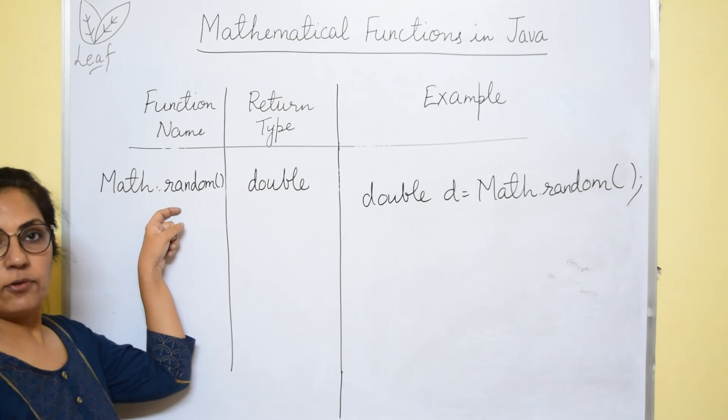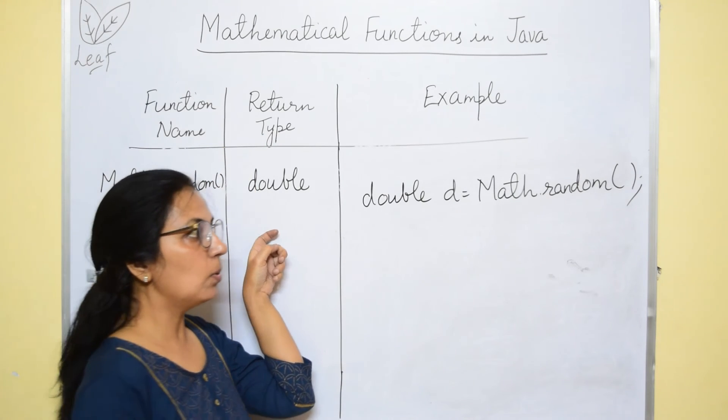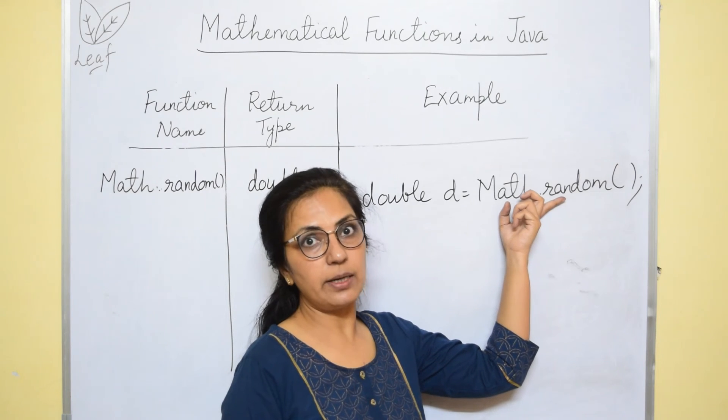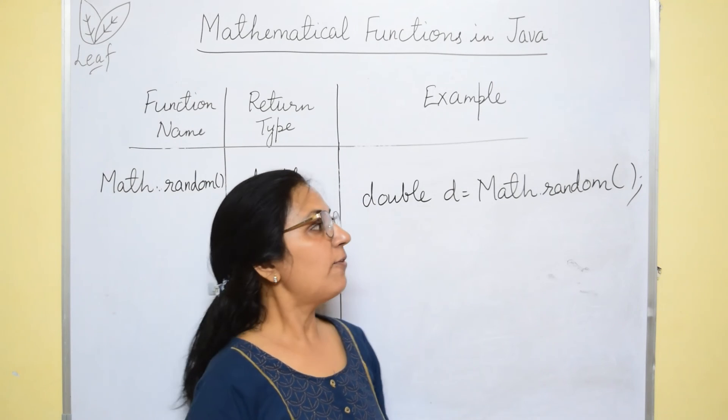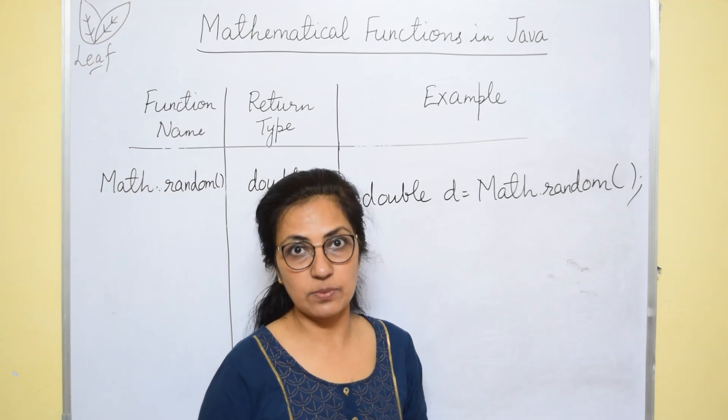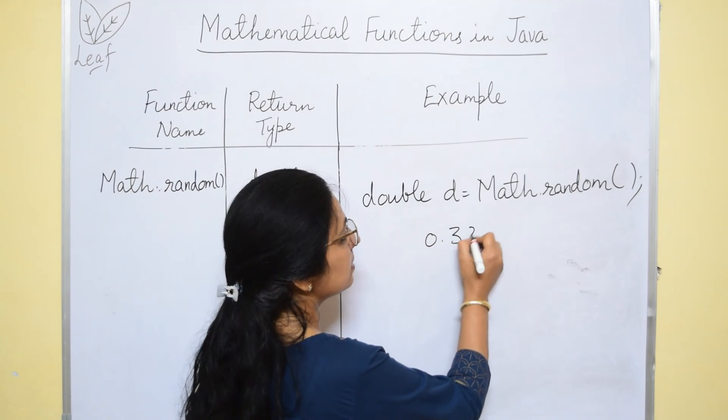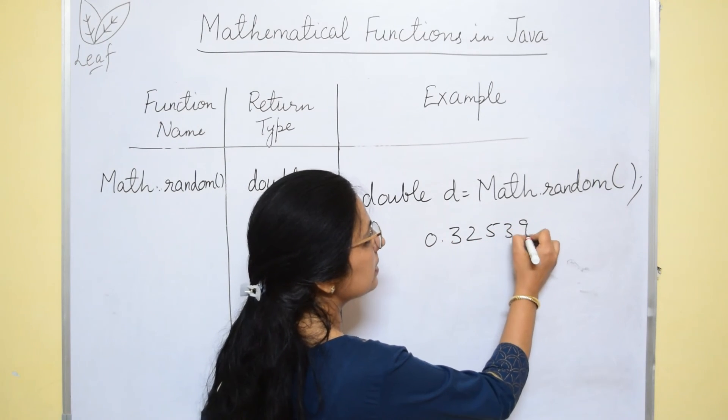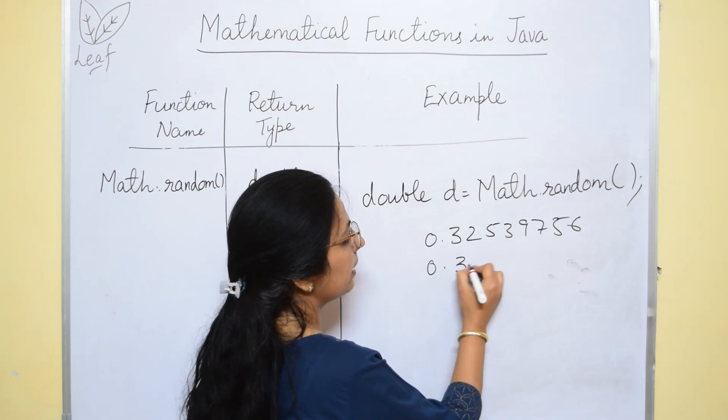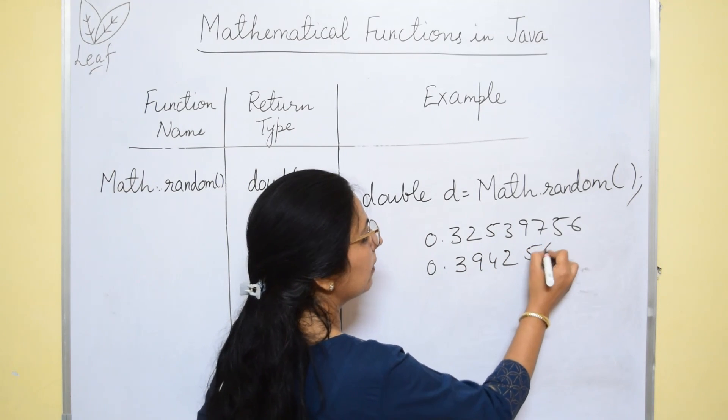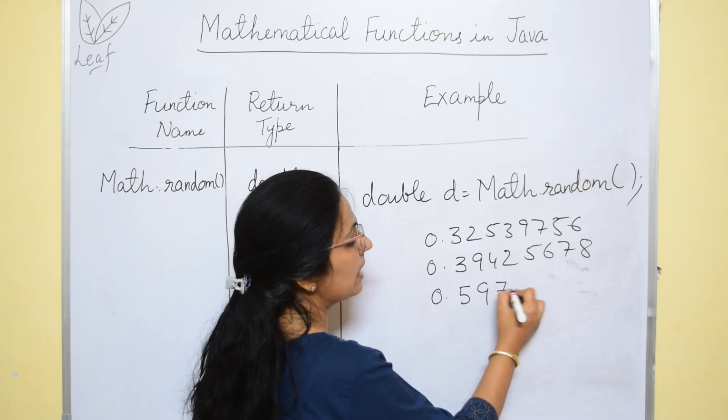Now, the last function of today's video is math.random which returns a double type value. As the random name is there, so this function returns a number generated randomly between 0 and 1. If I execute this function 10 times, then also every time it will return a different value. Suppose the first time answer is 0.32539756 like this. If again second time I will execute it, it will return 0.394256. Next, if I use this again, then the answer will be like this.